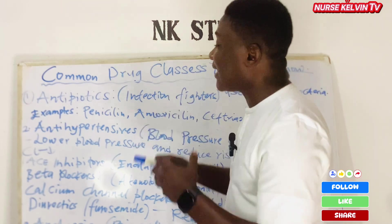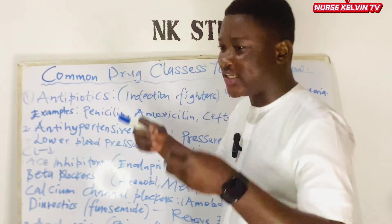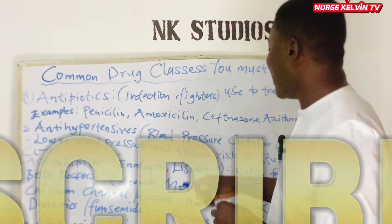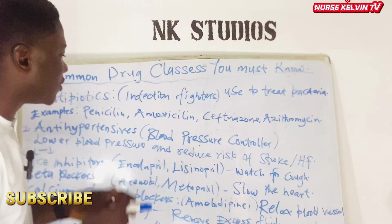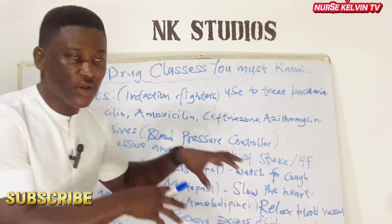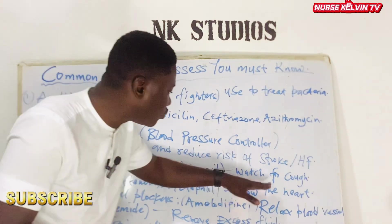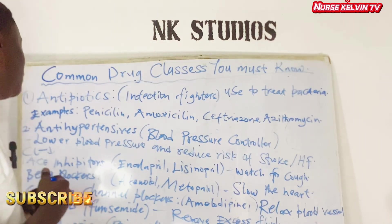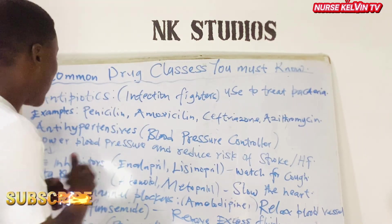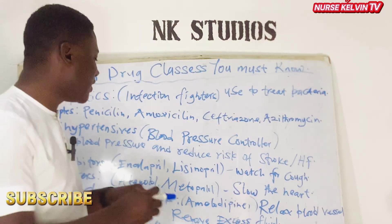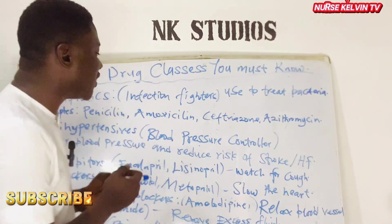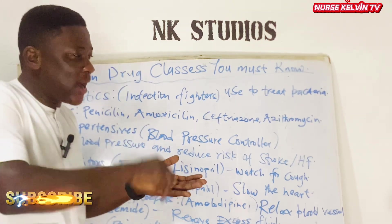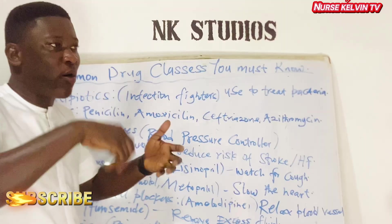Under the anti-hypertensive class, we have subclasses. The first are the ACE inhibitors, with medications like enalapril and lisinopril. These medications are known to cause a side effect of cough. Then we have the beta blockers, such as atenolol and metoprolol. These medications slow the heart rate.